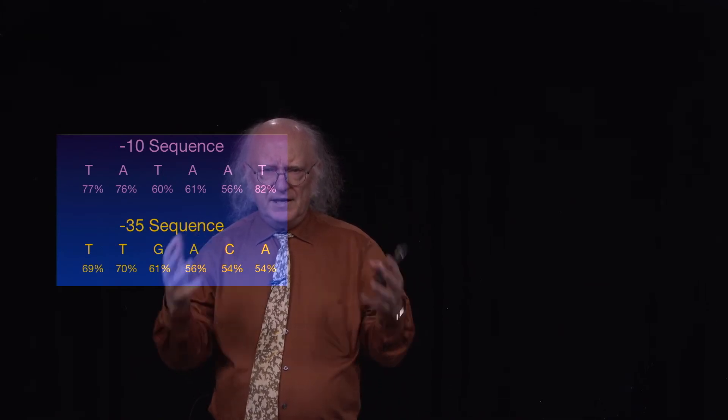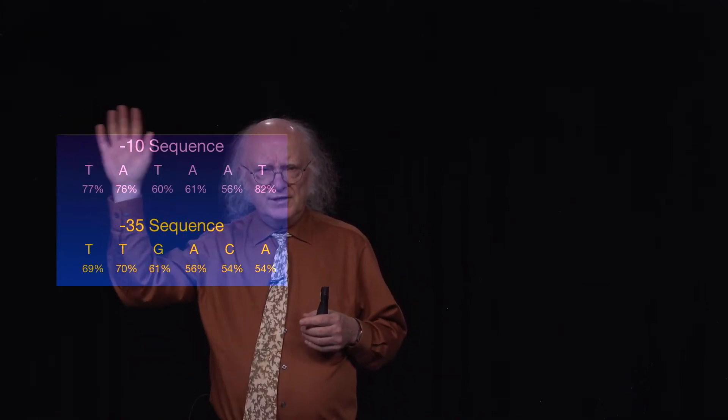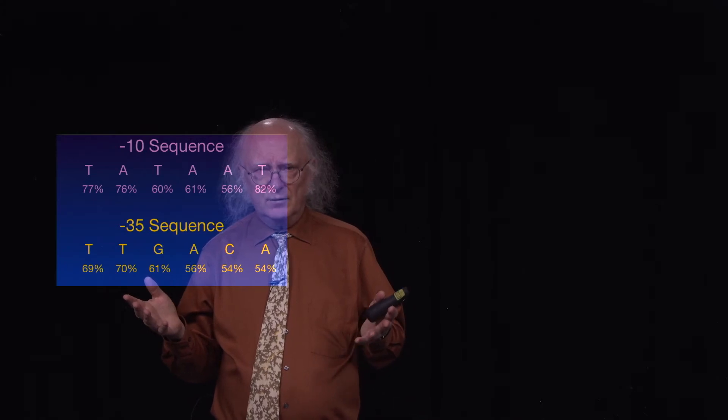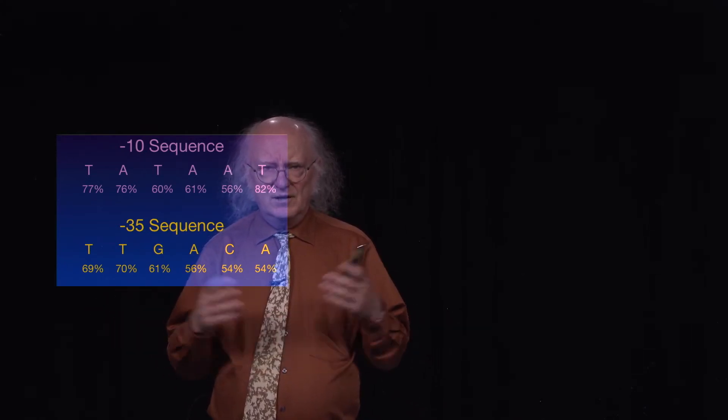These sequences are sort of road signs. They're not identical road signs because not all, for example, road signs found on a highway are identical either. Towns have their own names, different speed limits, and so forth. When we look at the consensus sequence, we see that very commonly at the minus 10 position we see an AT rich sequence, and while there are variations in that, this is a road sign that says there's a gene nearby that may be necessary for transcription.